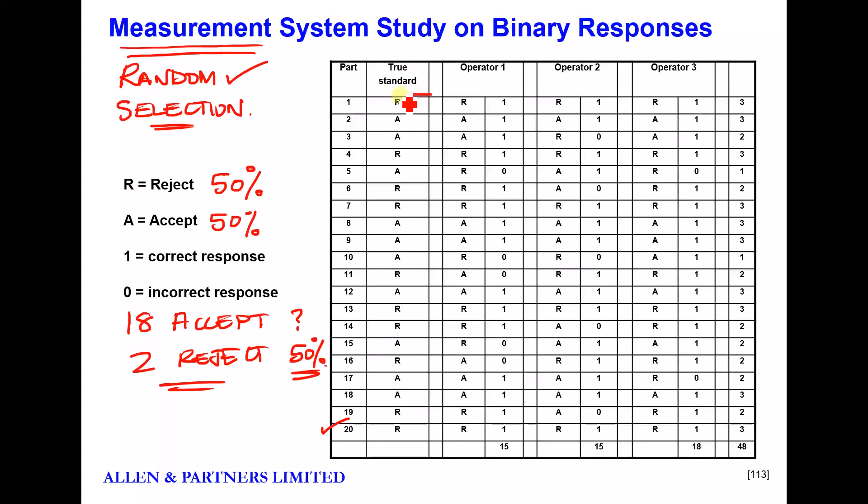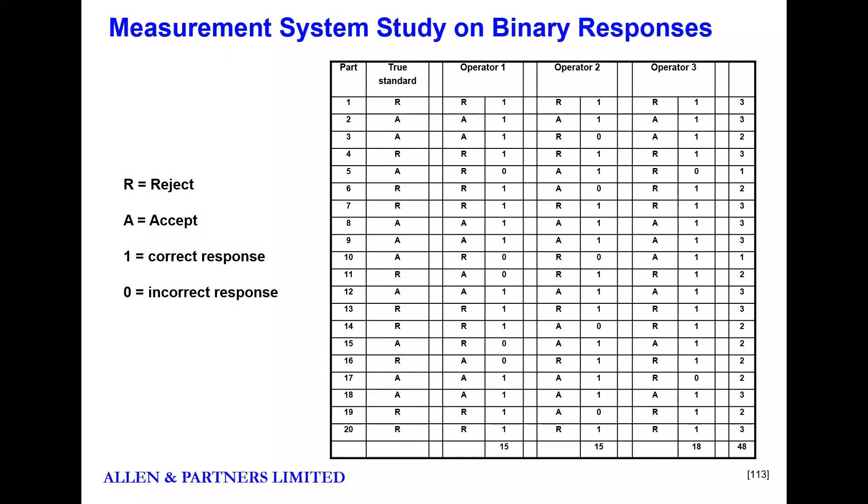And also, it's very important that we decide a true standard. So here is the true standard in this column here. In other words, someone who is the company holder of the standard, someone who is considered to be an expert, has sat. They've stared at these 20 parts for three days. They are absolutely certain half of them are good, half of them are rejects. So that's very important. There is a true standard. In the case of measurable data, there is no such thing as a true standard. We are just looking for repeatability. So we've selected deliberately, we've made a deliberate selection, 50-50. We've identified the true standard, whether it's a good one or a bad one. We've spent a lot of time making sure that that's correct.